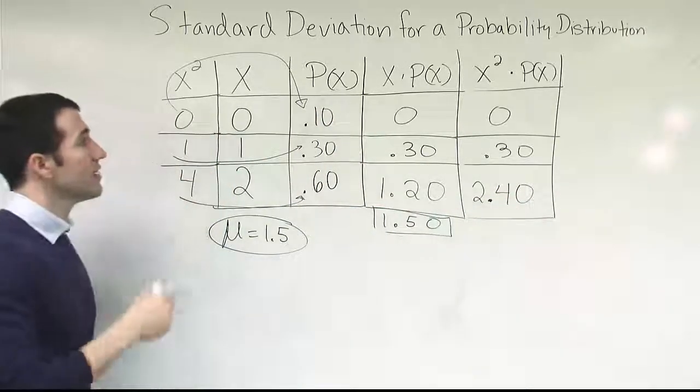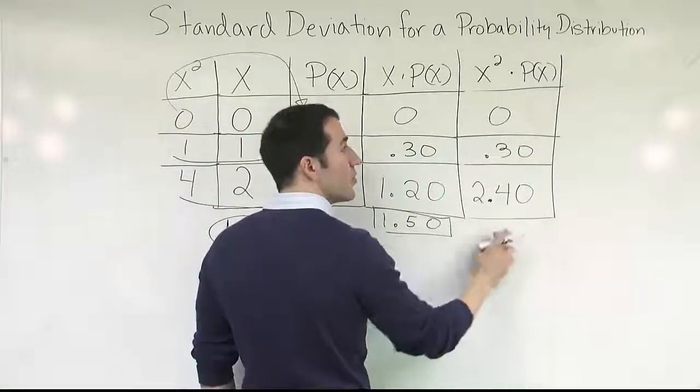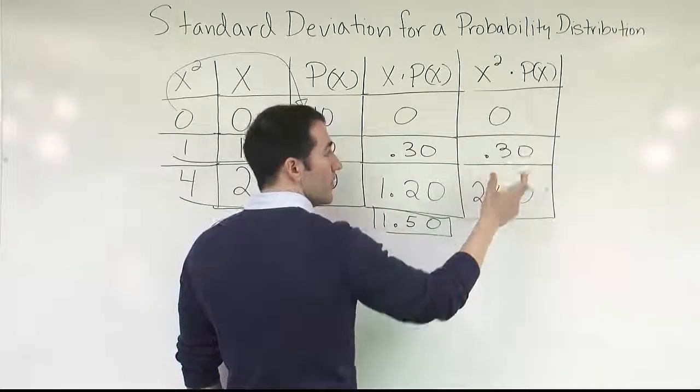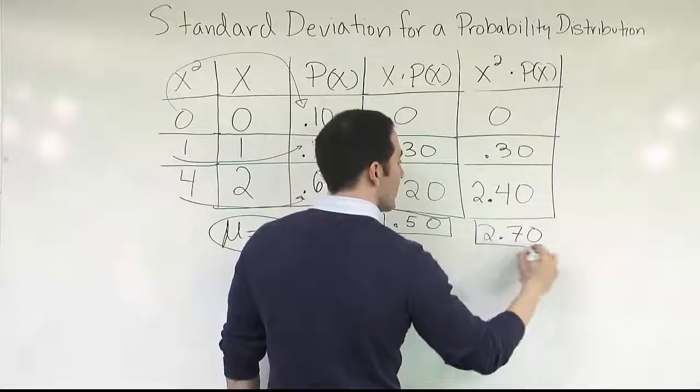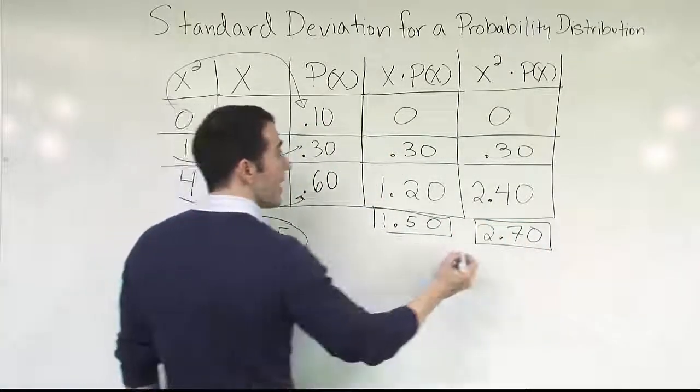All right. So 4 times 0.60 and you're going to get 2.40. All right. So now you have x squared times p of x accomplished. We need to total that to get the number at the bottom. We need the total to work in our formula. So 0 and 0.30 are, of course, 0.30. These two add together and give you 2.70. All right. So now we have our two values.